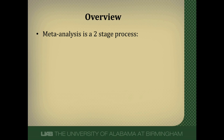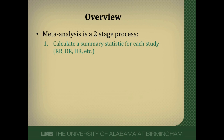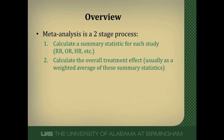Meta-analysis is a two-stage process. In the first step, we calculate a summary statistic for each of the individual studies included in the analysis. That could be a relative risk, an odds ratio, a hazards ratio, a risk difference, et cetera. Then in step two, we calculate an overall treatment effect of all these summary statistics, and usually what it is is a weighted average of these summary statistics, where the weight tends to be an inverse of the variance. We'll talk about this more toward the end of this video.